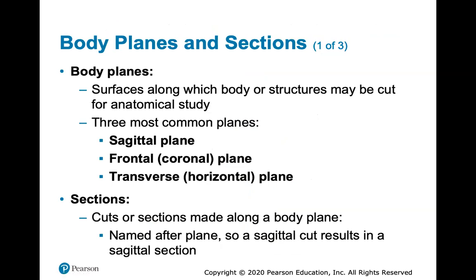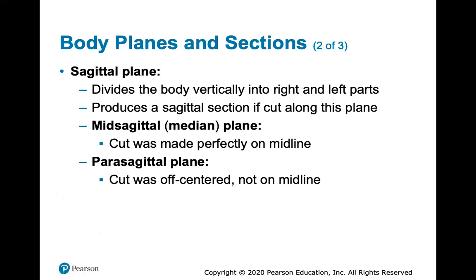Body planes and sections are surfaces along which the body or structures may be cut for anatomical study. It's important to know these as you enter a healthcare-related field — if you're ever helping someone understand their x-ray or MRI scan, the three most common planes are the sagittal plane, the frontal or coronal plane, and the transverse or horizontal plane. These sections are named after the plane, so a sagittal cut results in a sagittal section. The sagittal plane divides the body vertically into right and left parts.